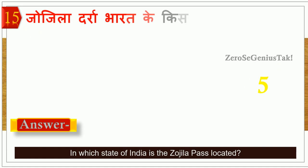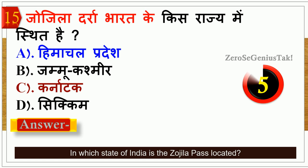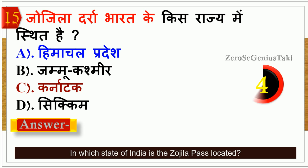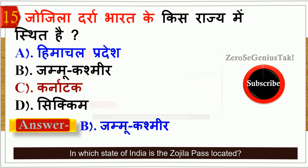अगला question — जोजीला दर्रा। इसके बारे में तो आपने पहले भी पढ़ा है और इस question को भी exam में काफी बार घुमाखफिराके पूछा गया है। पूछा जा रहा है — जोजीला दर्रा भारत के किस राज्य में स्थित है? और इसका सही जवाब है — जम्मू और कश्मीर।